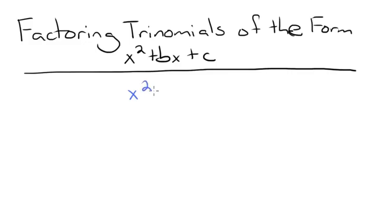Factor the trinomial x squared plus 2x minus 63. First, we're going to set up two sets of parentheses.